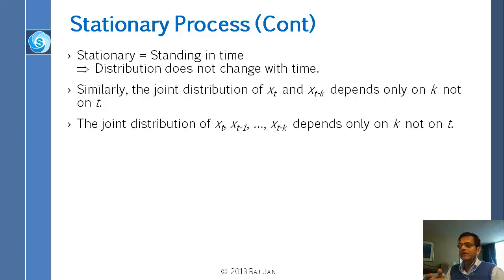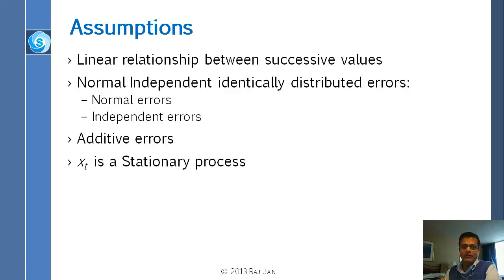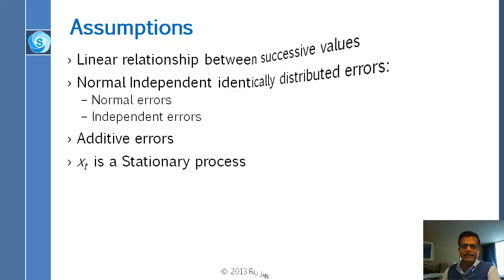That is the definition of a stationary process. The autoregressive process we discussed earlier also assumed stationarity, though we didn't explicitly say so. Like any linear regression, we have assumed a linear relationship between successive values — it could be multiplicative or exponential, but here we assume linear. We also assume errors are normal, independent, and identically distributed — only then can we find confidence intervals. Additionally, we assume additive errors and that xt is a stationary process.